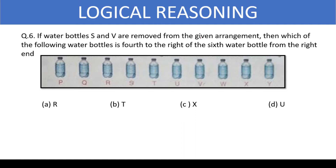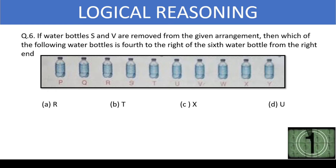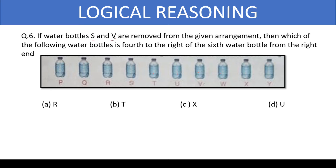If water bottles S and B are removed from the given arrangement, which water bottle is fourth to the right of the sixth water bottle from the right end? First, remove water bottles S and B. Then, the sixth water bottle from the right end — counting one, two, three, four, five, six — is R. Fourth to the right of R — counting one, two, three, four — is X. So sixth is R and fourth to its right is X. The right answer is option C.